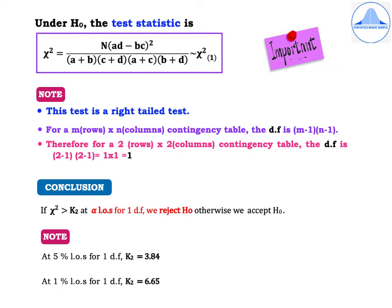For a 2x2 contingency table, the degrees of freedom is 1. In general, for an M by N contingency table, the degrees of freedom is (M minus 1) into (N minus 1). Since we have 2 rows and 2 columns, the degrees of freedom is (2 minus 1) into (2 minus 1), which equals 1.